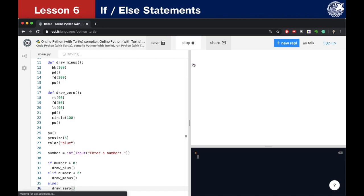Let's see how this code works. Let's enter 0, good, let's enter negative 10, good and positive 5, perfect.